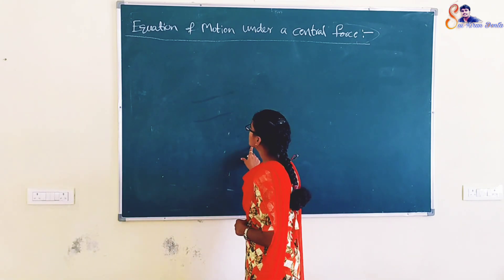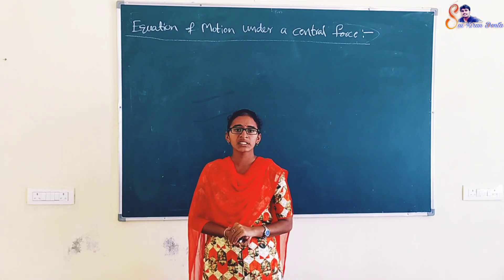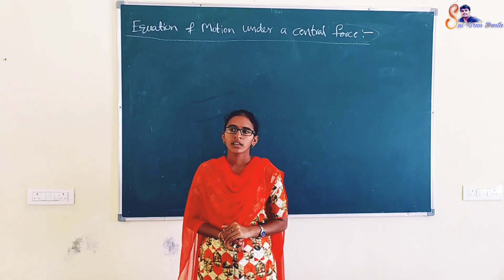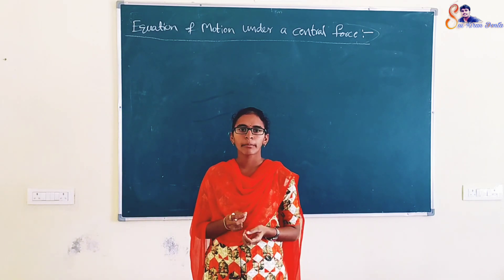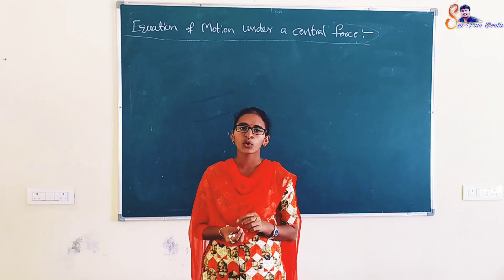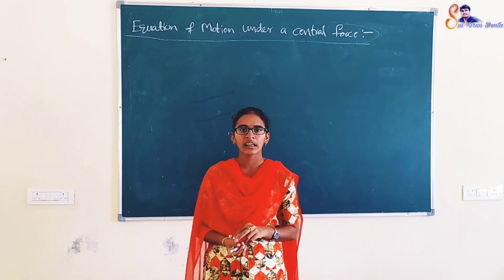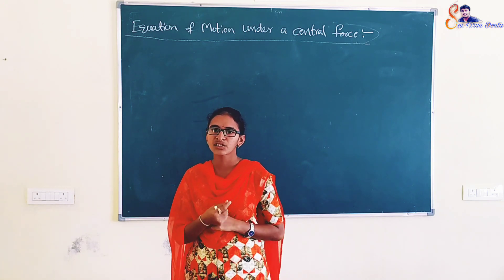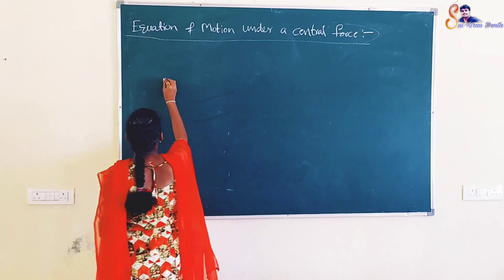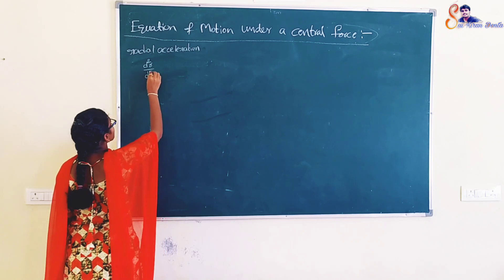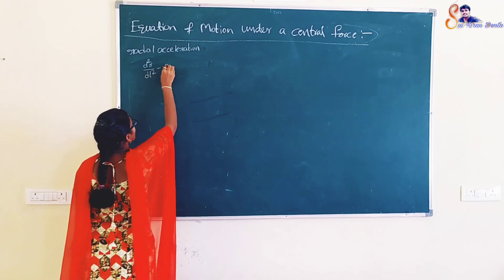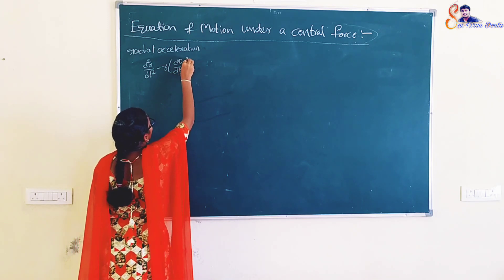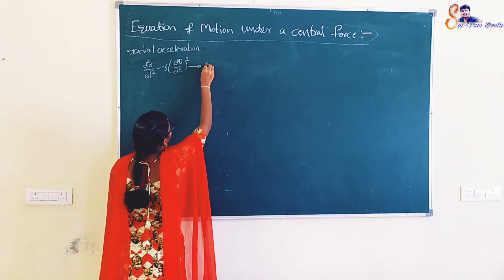When a body moves under the action of a central force, the force is radial and always directed towards the fixed point. The radial acceleration is given by d²r/dt² minus r(dθ/dt)². We consider this as equation 1.